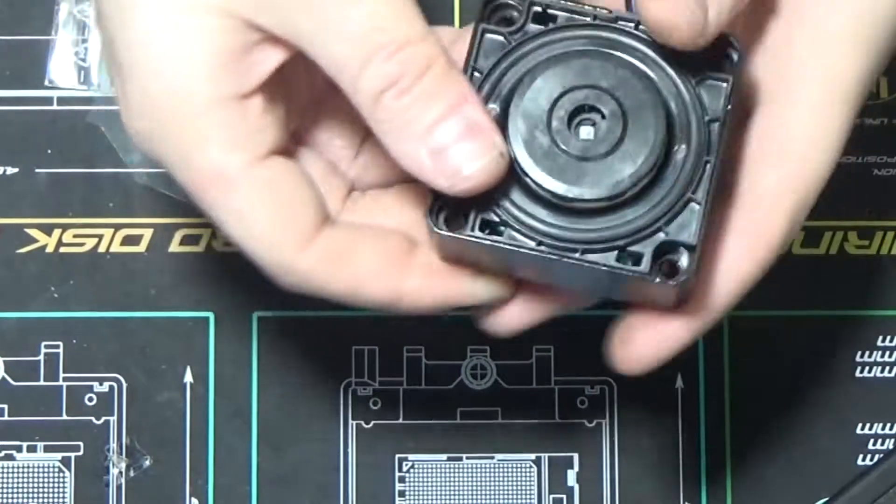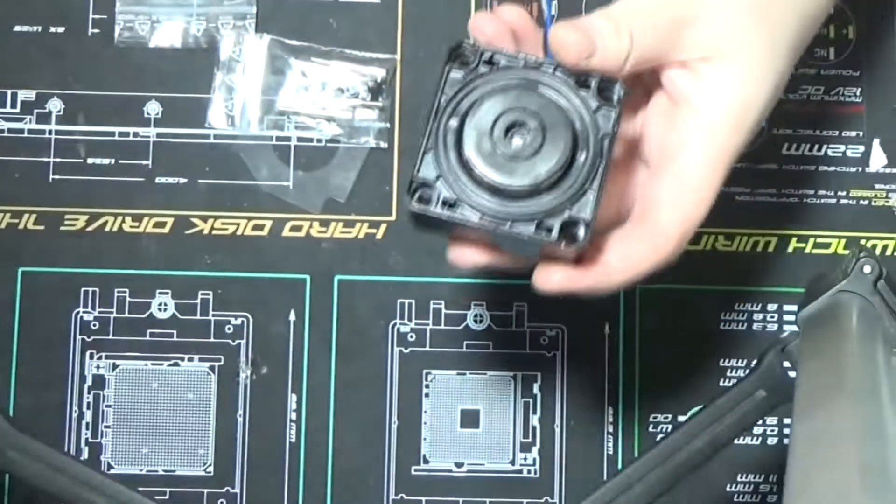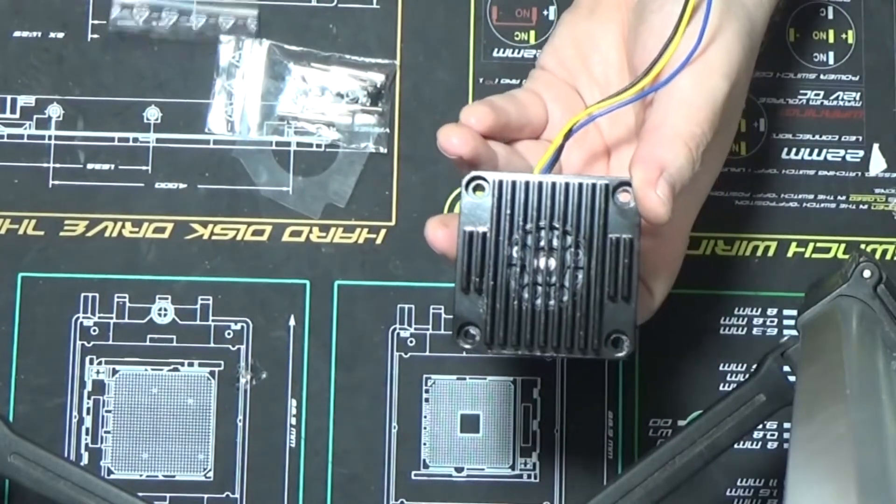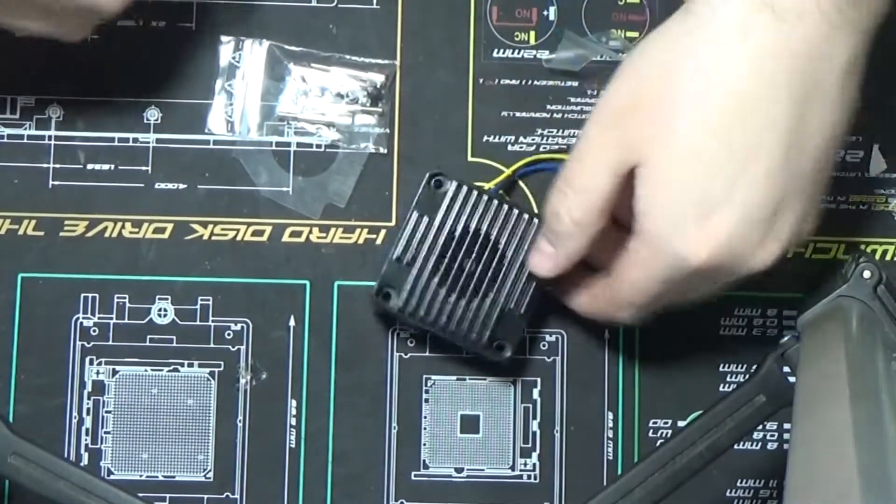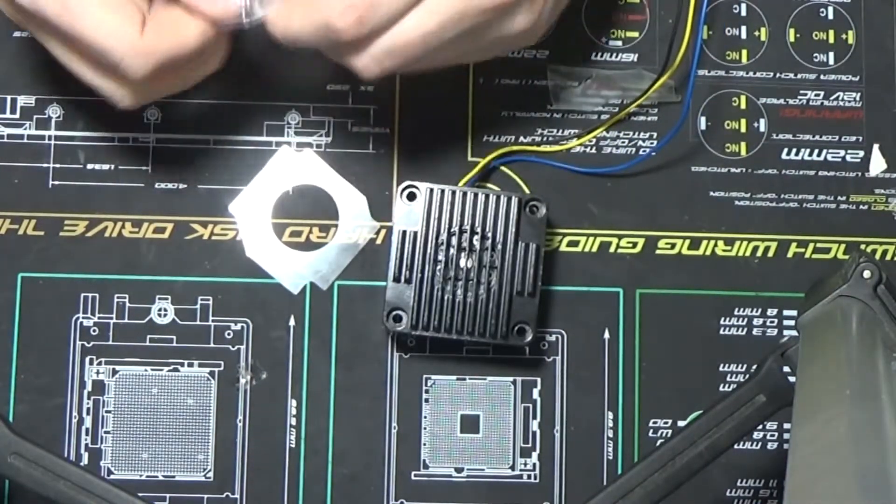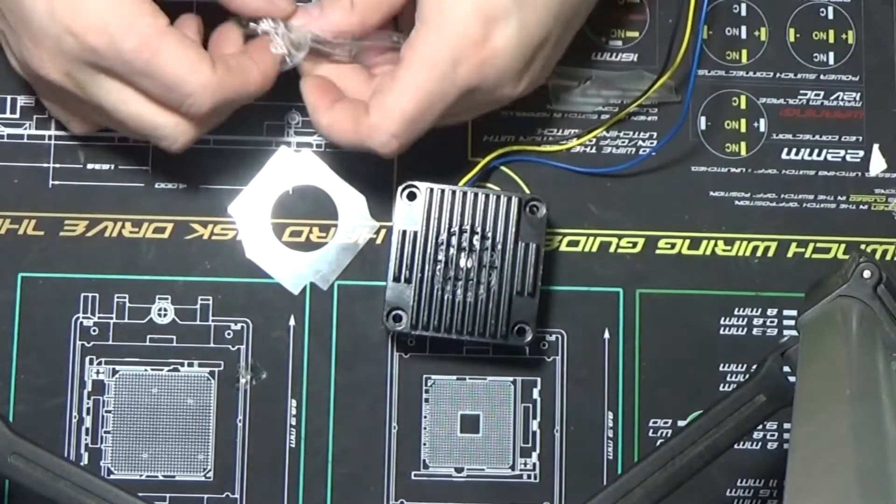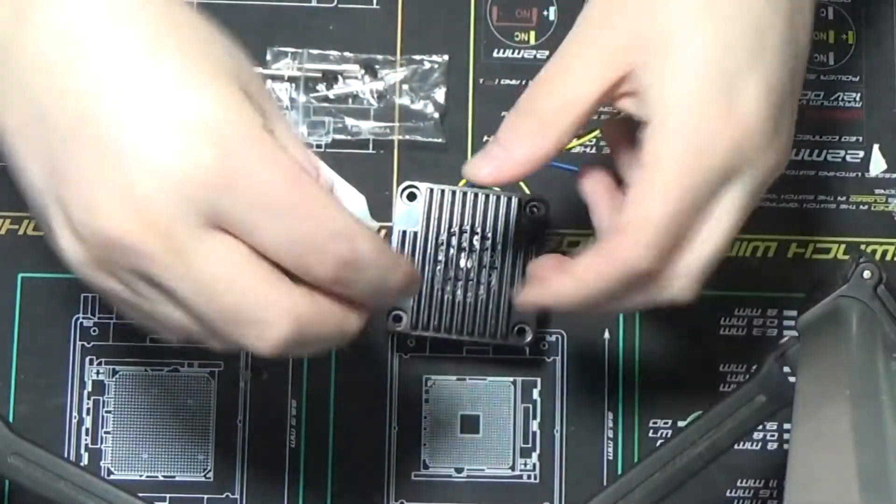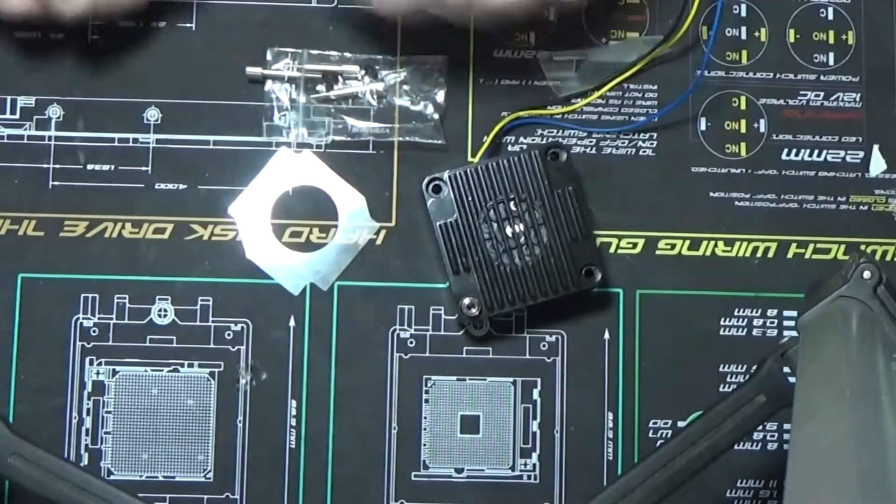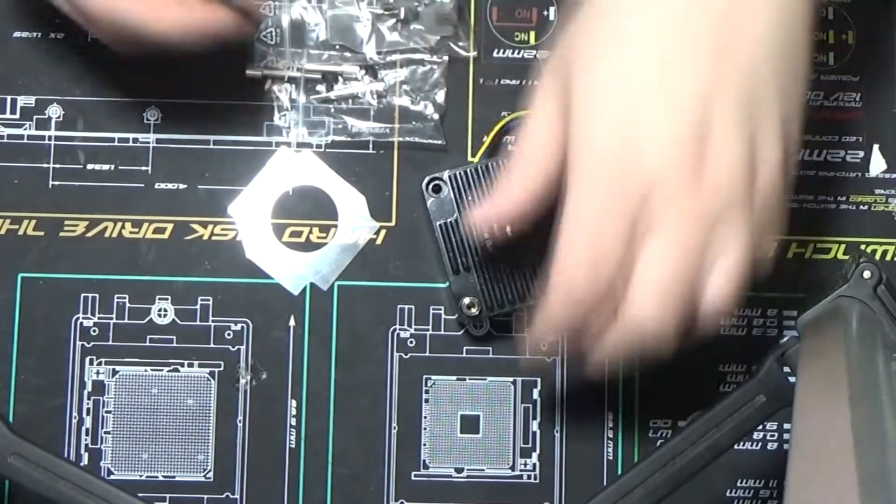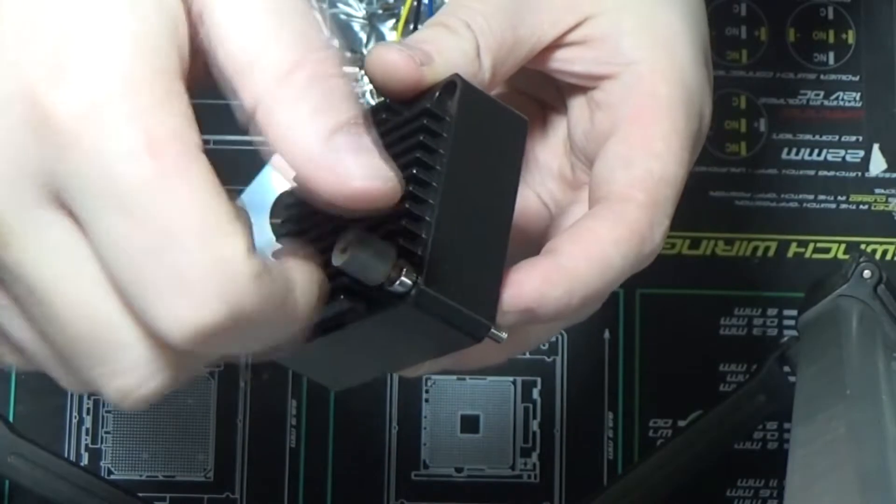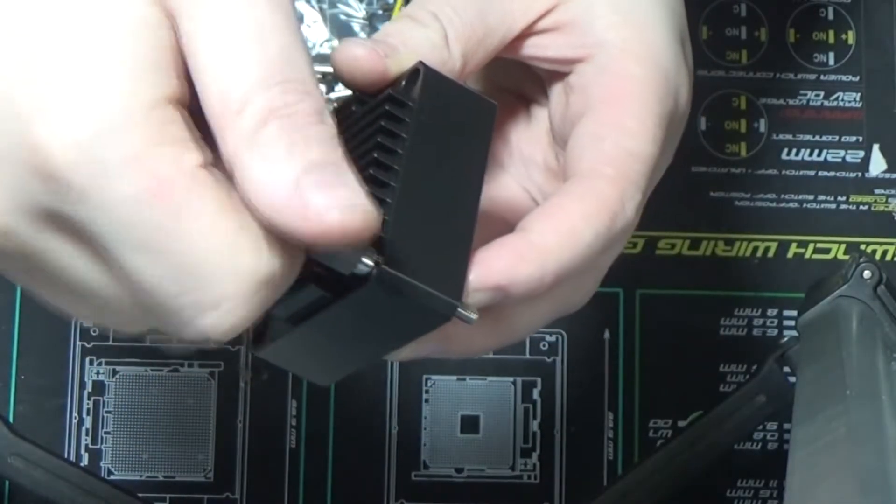All right, so that's it. You now have a heat sink installed on your DDC. Again, you have a couple different types of screws here. This is pretty standard for all DDC heat sinks. You have your main screw here, which is going to go in and screw into your pump top.